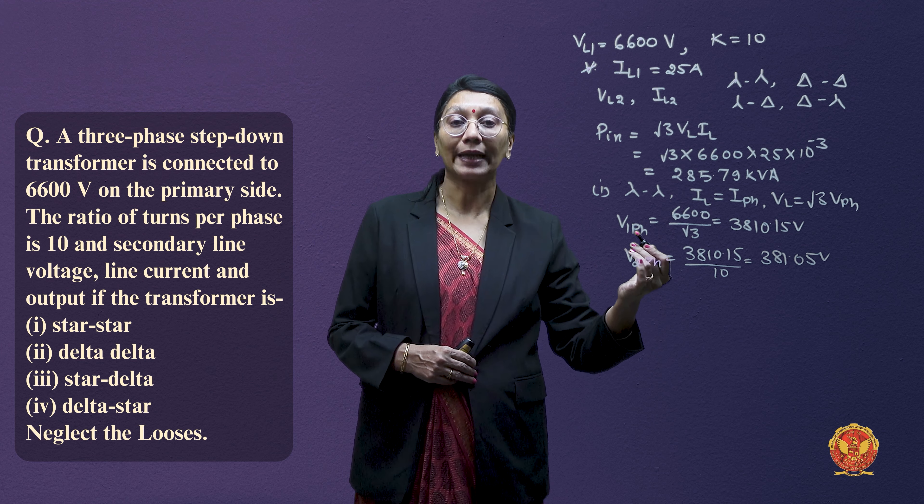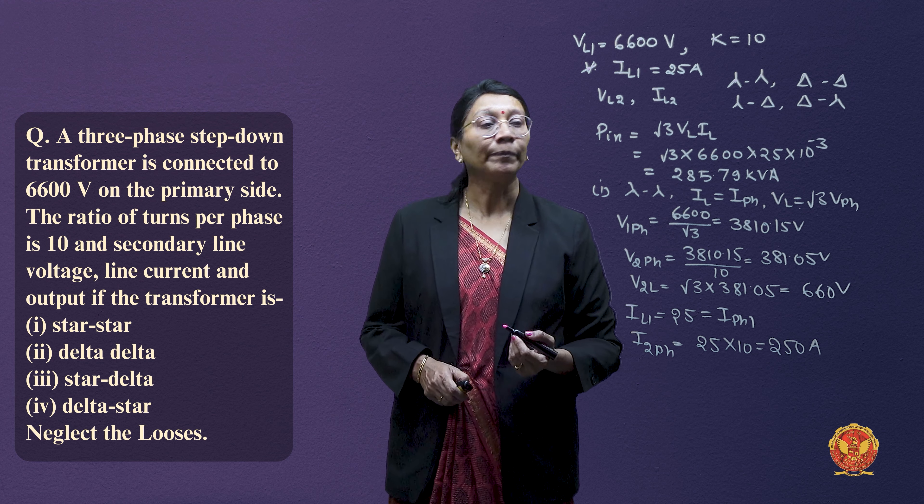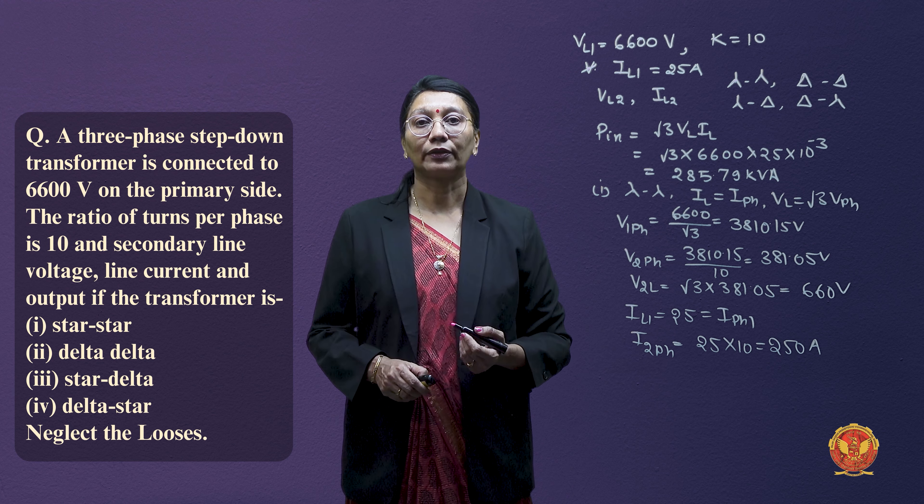For star connection, phase current and line current are equal. The primary line current is 25 A, which equals the primary phase current. For the secondary side, we multiply by the transformation ratio K = 10, giving secondary phase current I2 = 25 × 10 = 250 A. Since it is a star-star connection, the secondary line current also equals 250 A. This completes the star-star case.